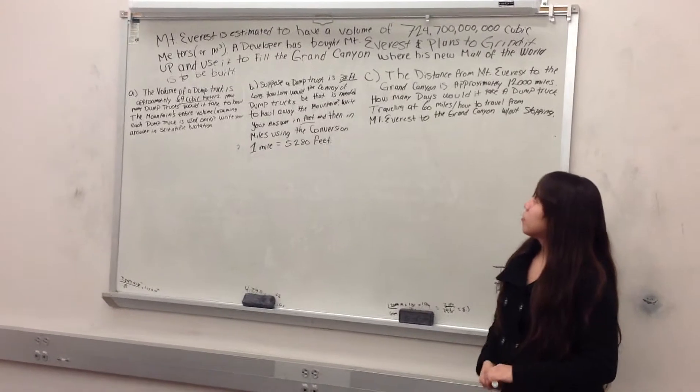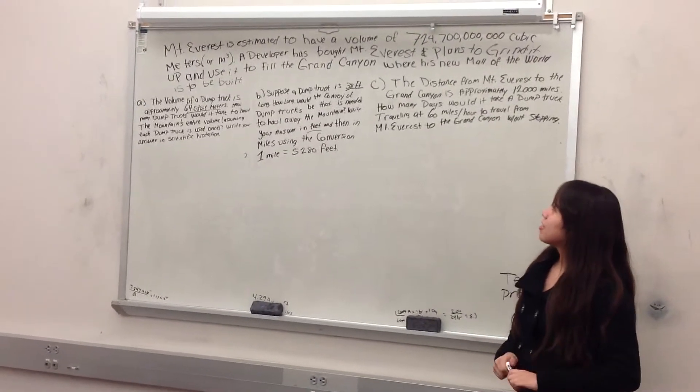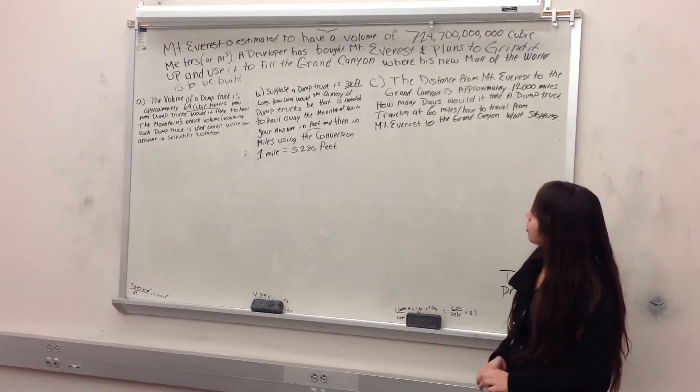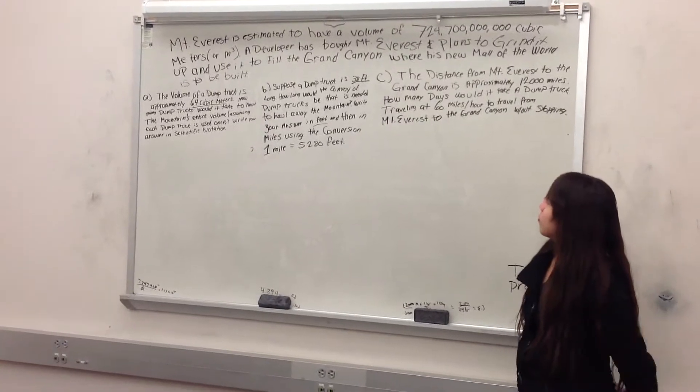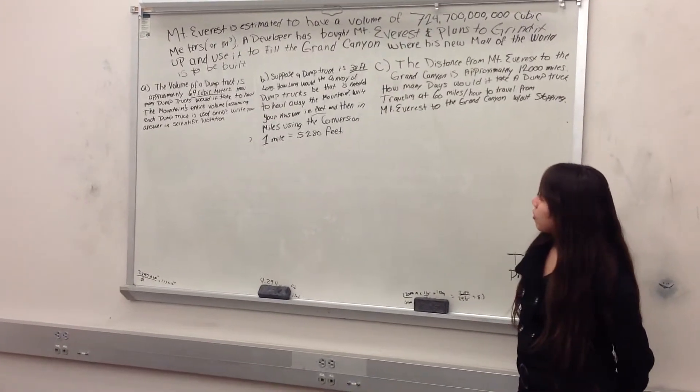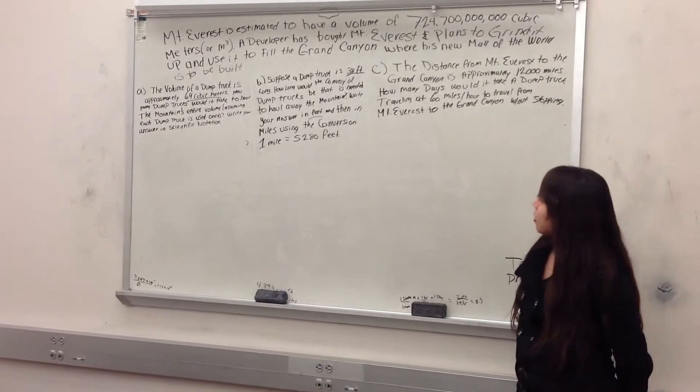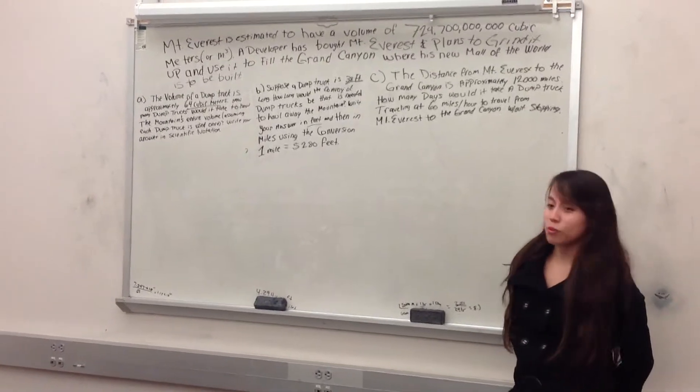Mount Everest is estimated to have a volume of 724,700,000,000 cubic meters. A developer has bought Mount Everest and plans to grind it up and use it to fill the Grand Canyon where his new model of the world is to be built.